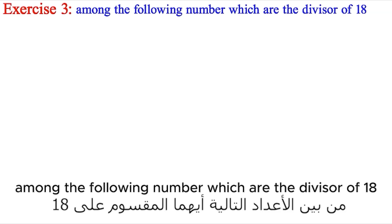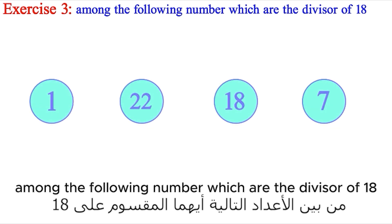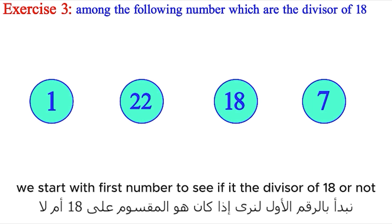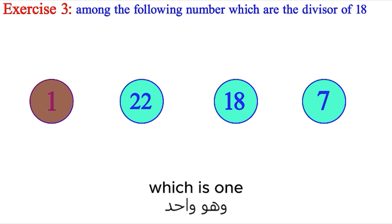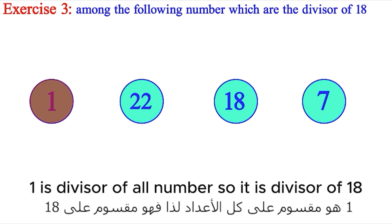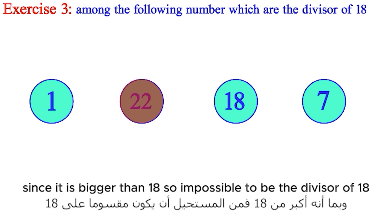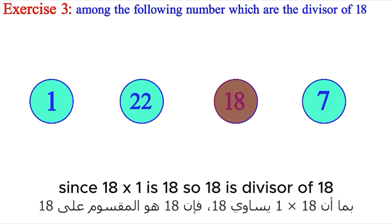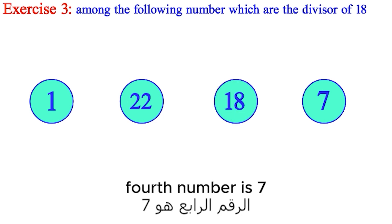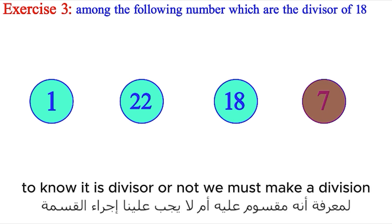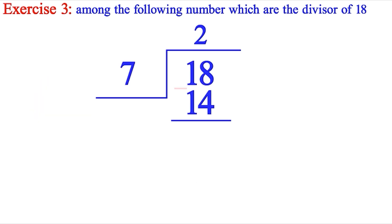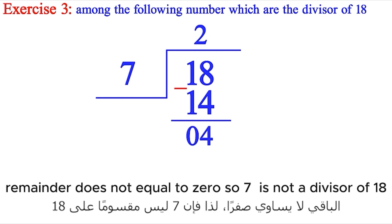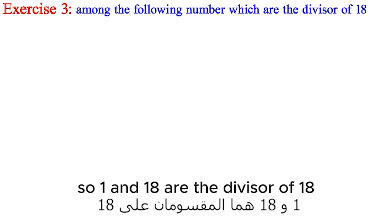Third question: Among the following numbers, which are divisors of 18? We start with 1: since 1 is a divisor of all numbers, it is a divisor of 18. Next, 22: since it is bigger than 18, it is impossible for it to be a divisor of 18. Next, 18: since 18 times 1 is 18, then 18 is a divisor of 18. Next, 7: we perform a division and the remainder does not equal 0, so 7 is not a divisor of 18. Therefore, 1 and 18 are divisors of 18.